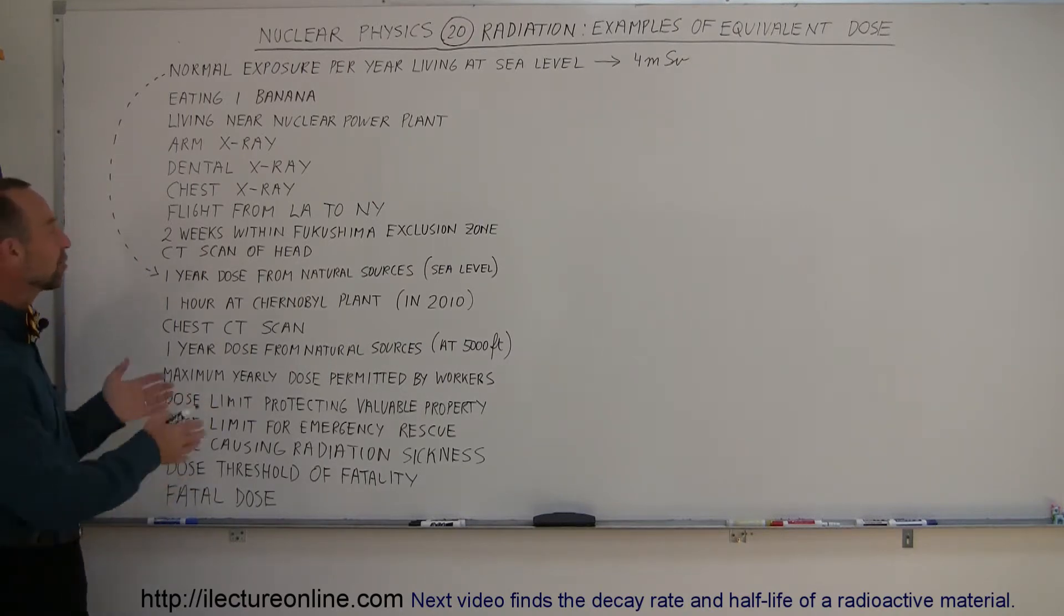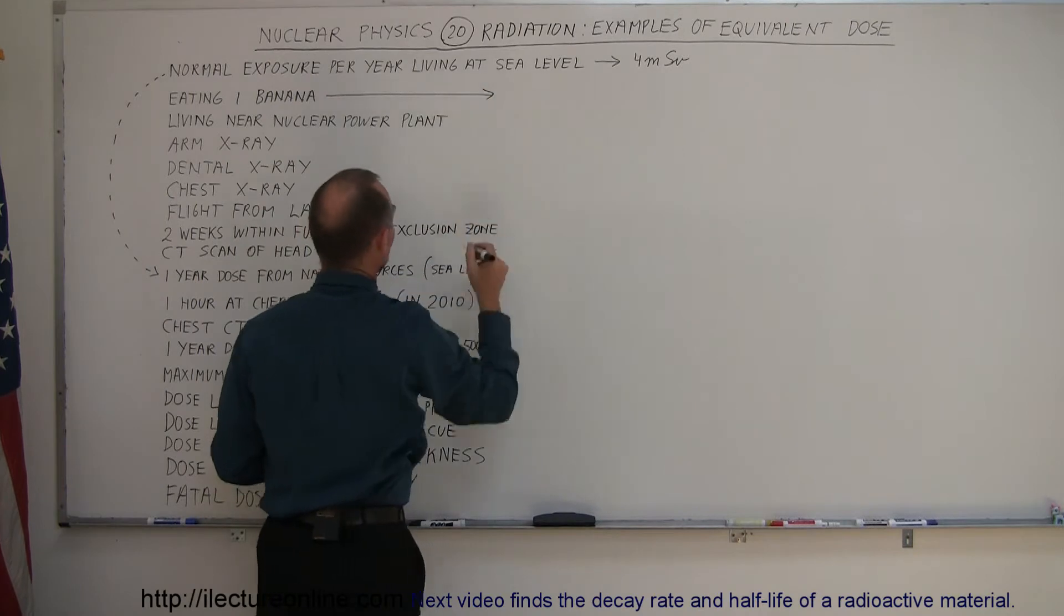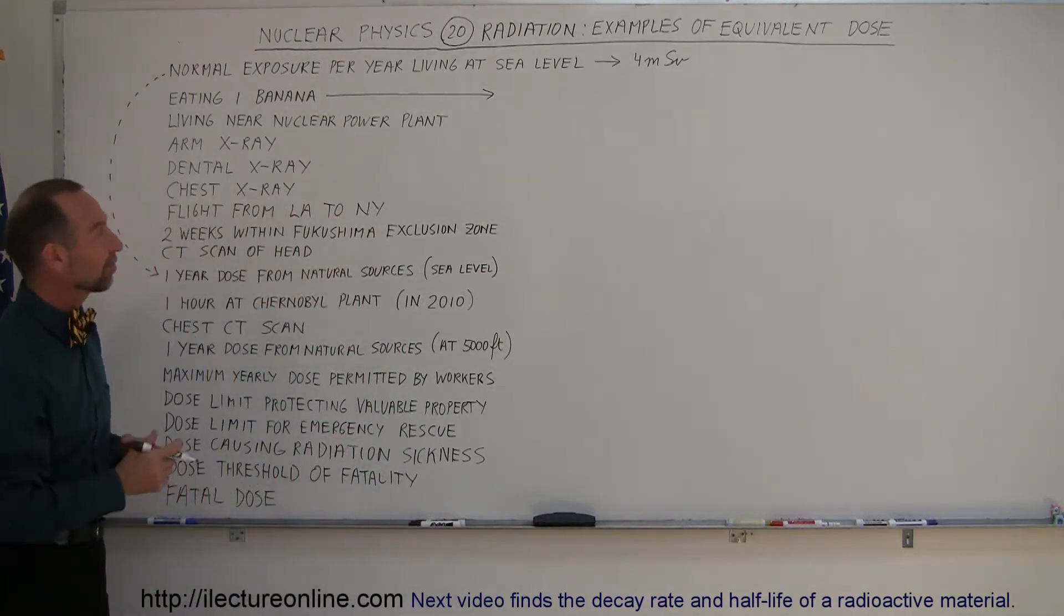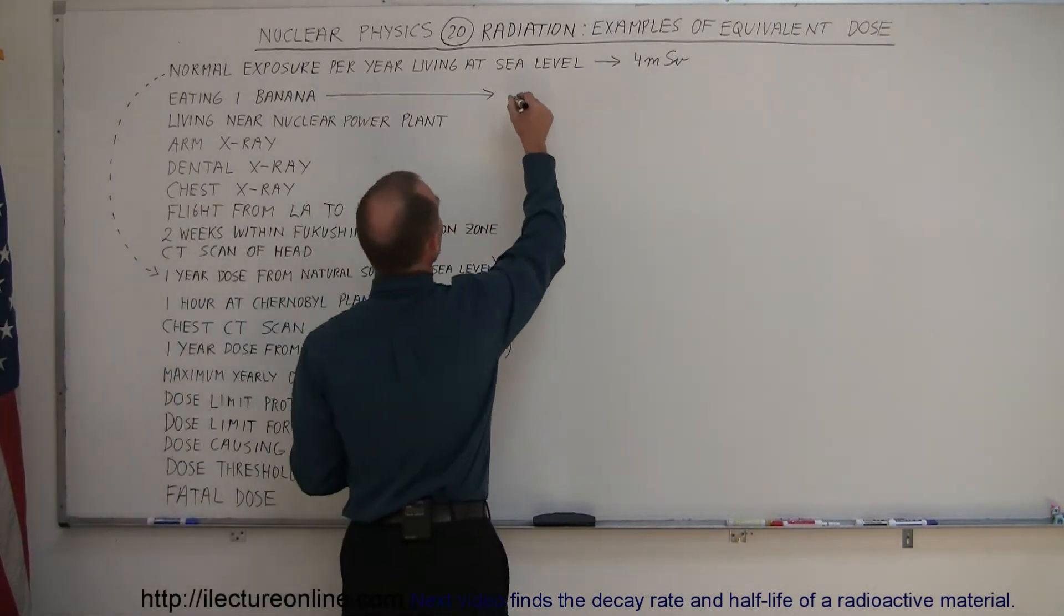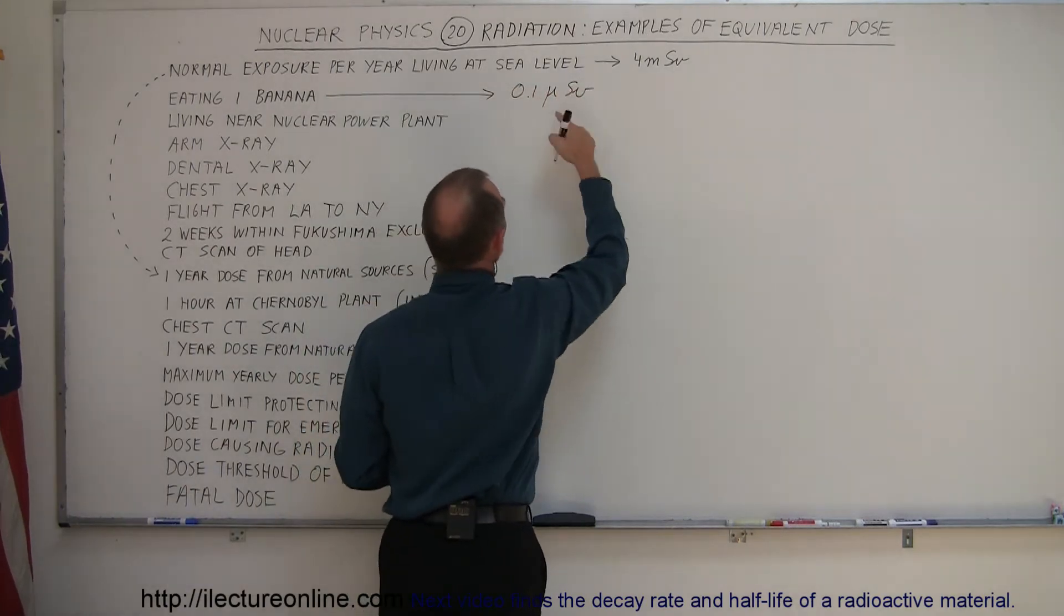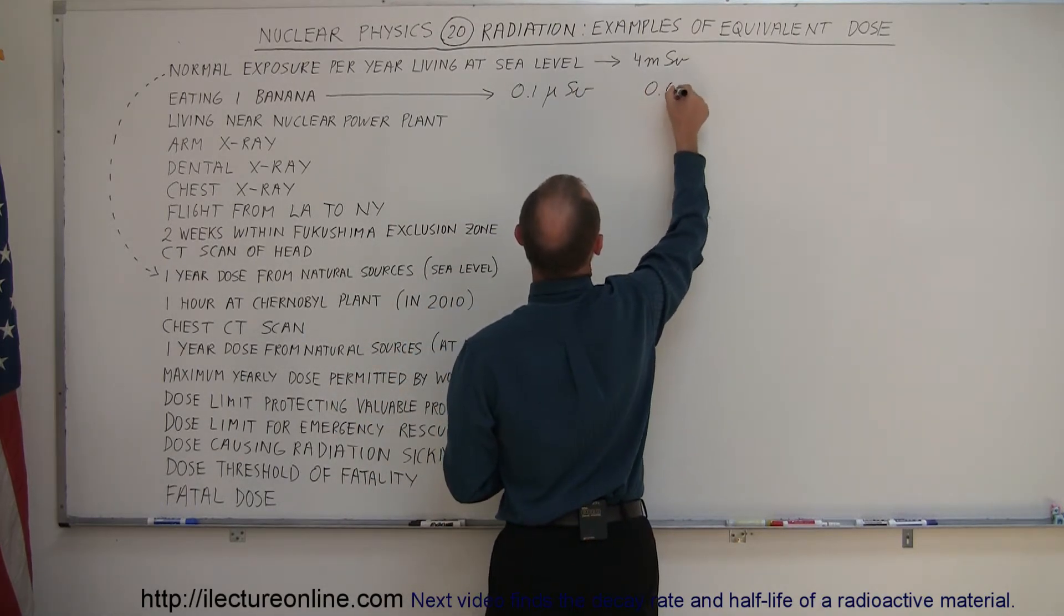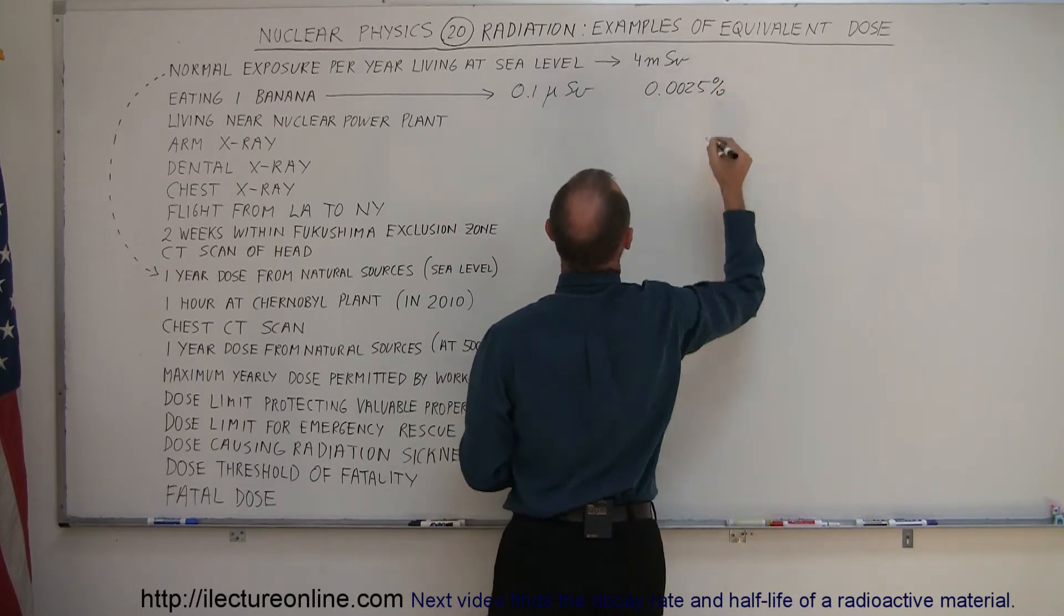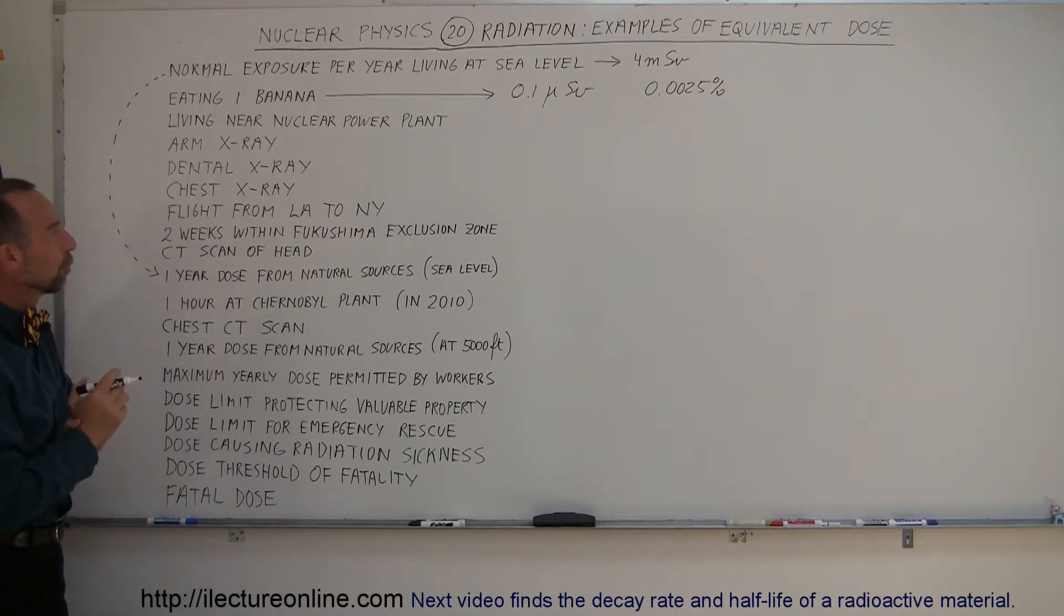In comparison, how much radiation do you receive in these particular circumstances? For example, what if you eat a banana? A banana does have radioactive potassium, and once you ingest it, before you digest it, you will receive some radiation from that, typically in the range of 0.1 microsieverts, which is very small compared to that. That's about 0.0025%.